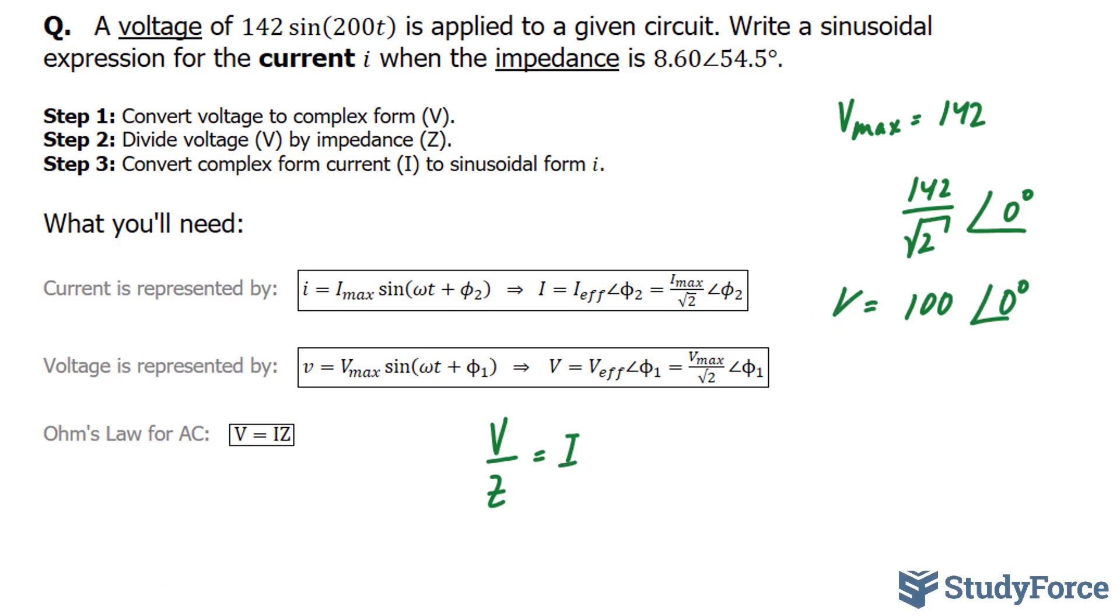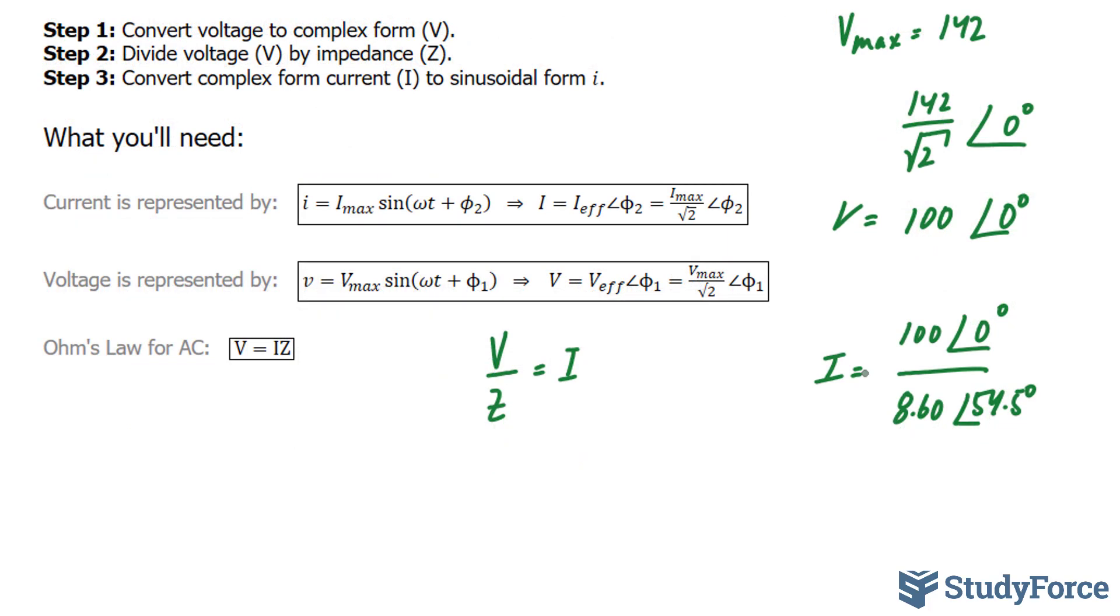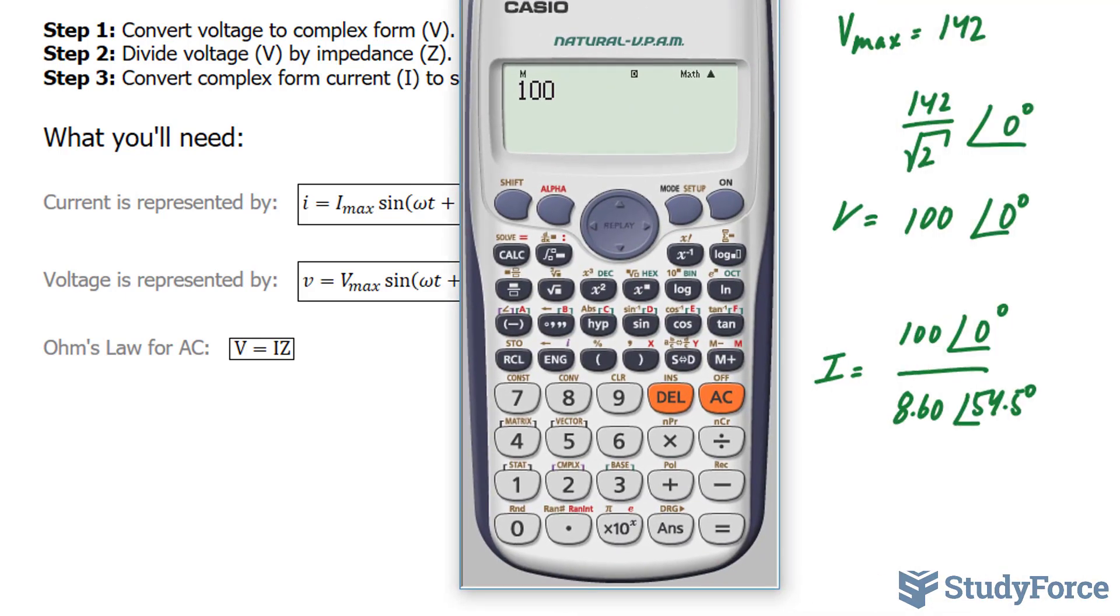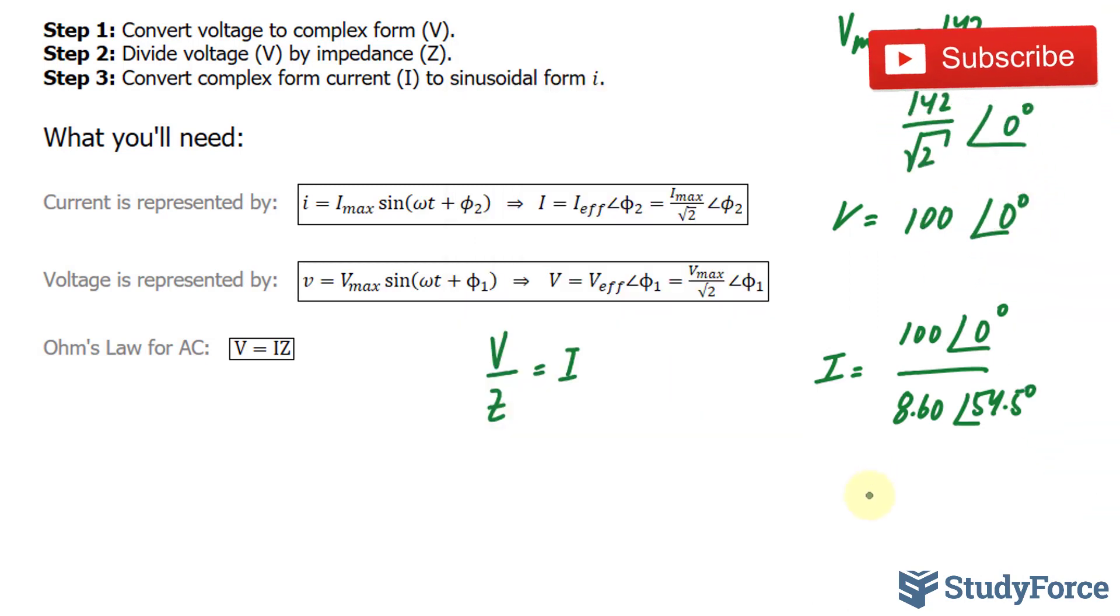Let's divide 100 ∠0° by the impedance, which is 8.60 ∠54.5°. When dividing two complex numbers in polar form, we first divide the radii. I do have a video dedicated on this subject. We end up with 11.6.